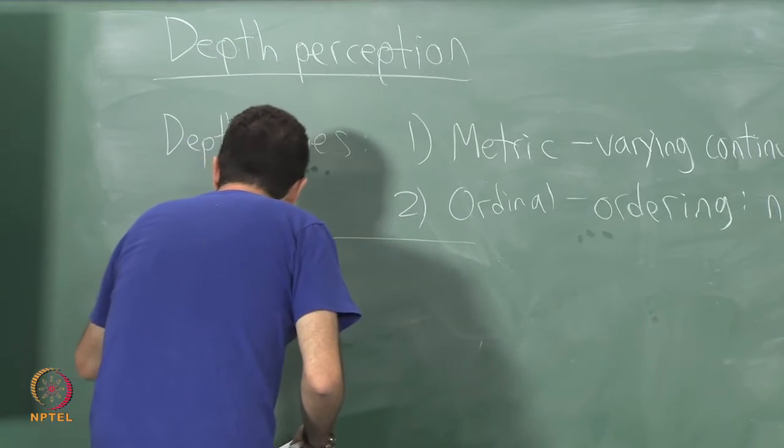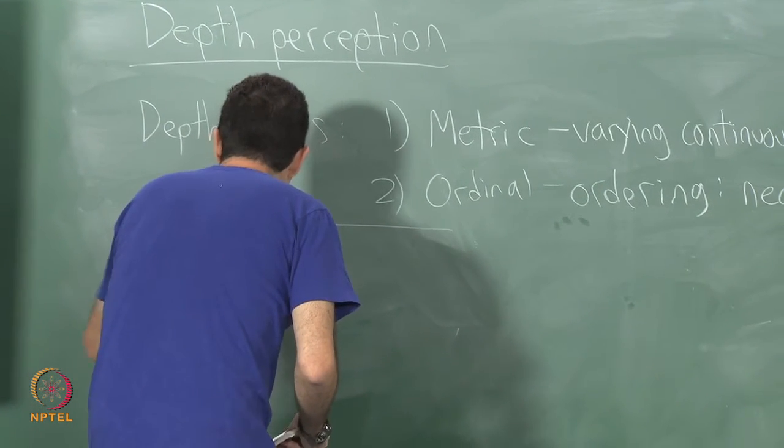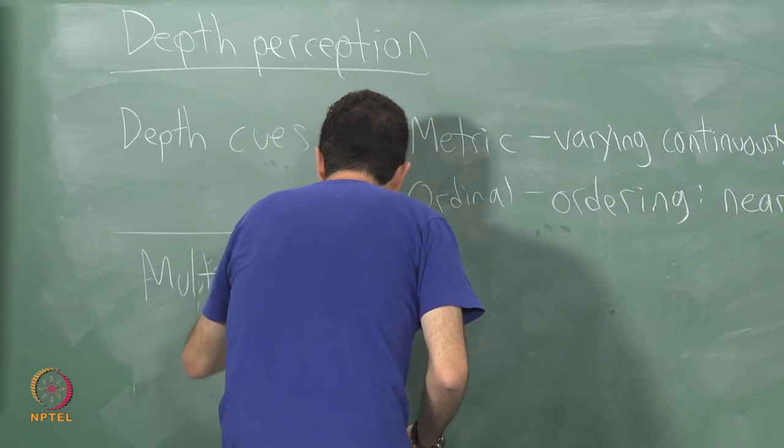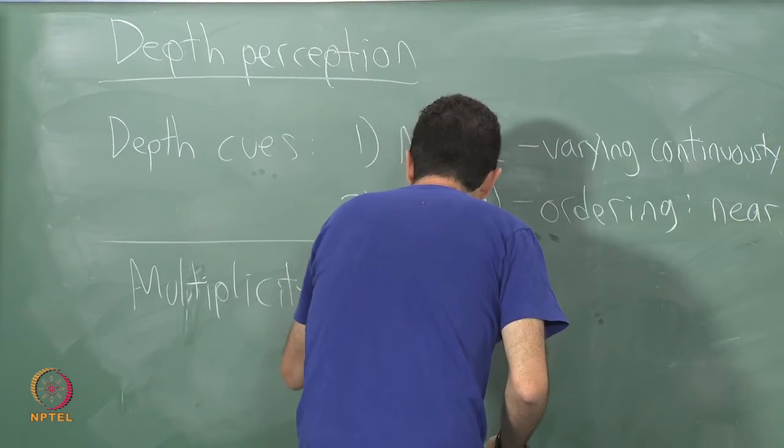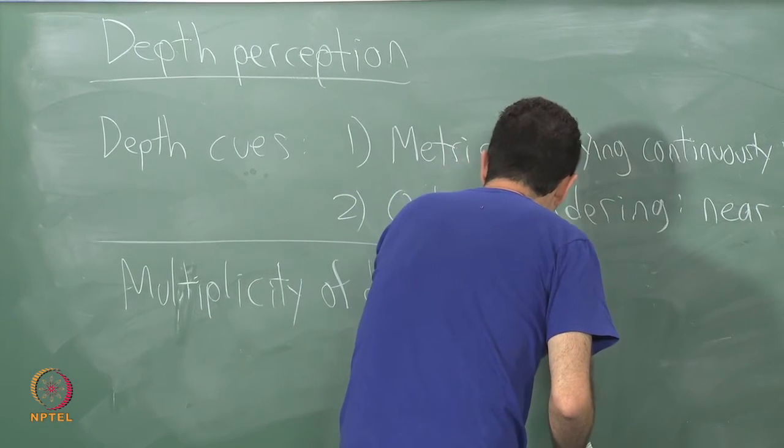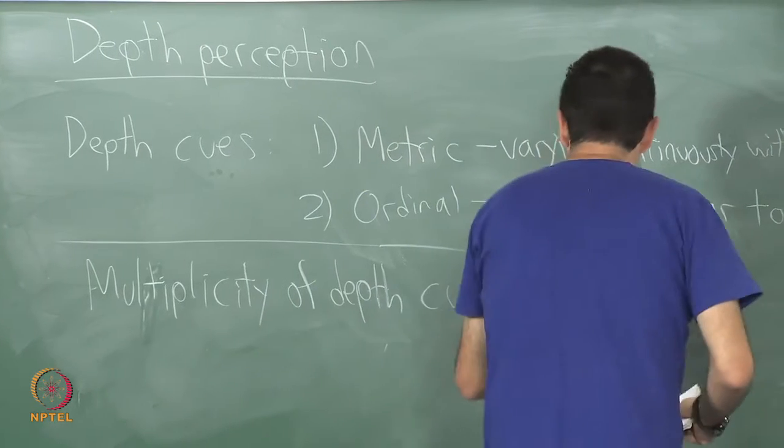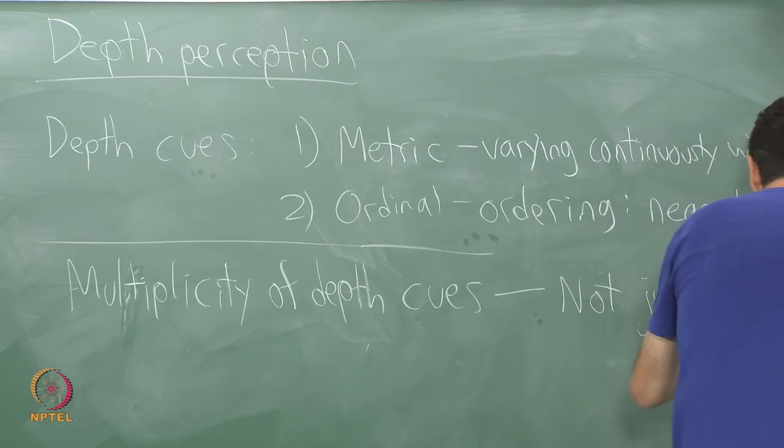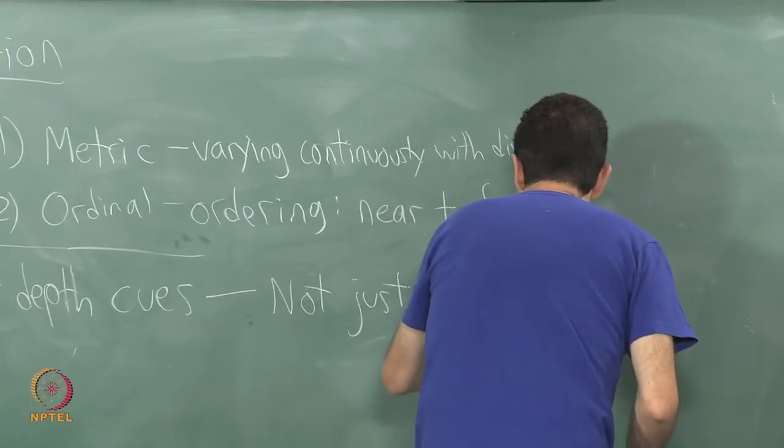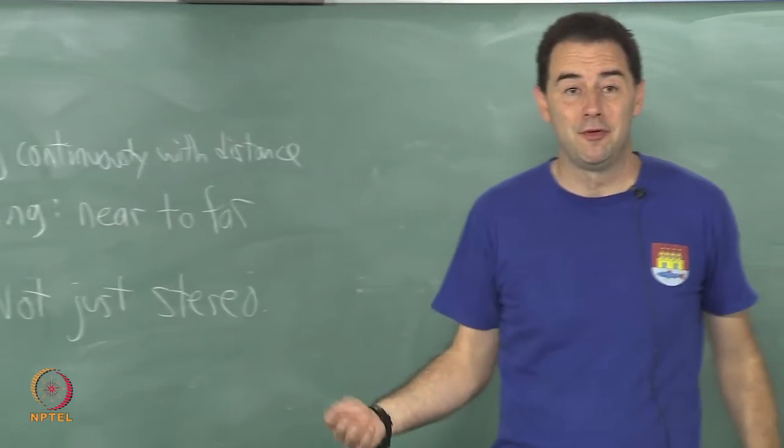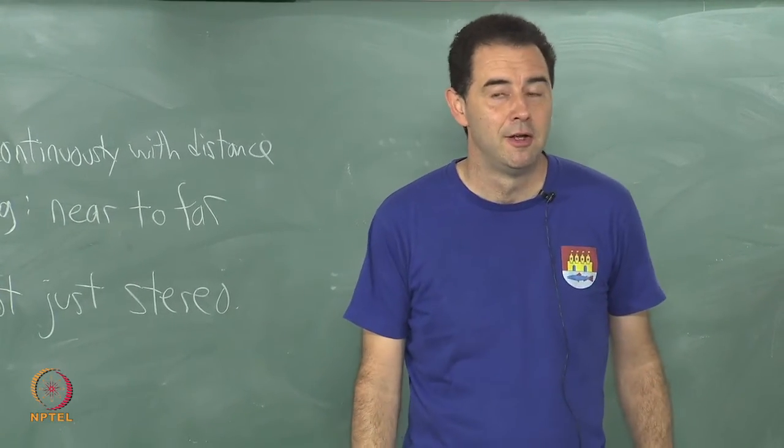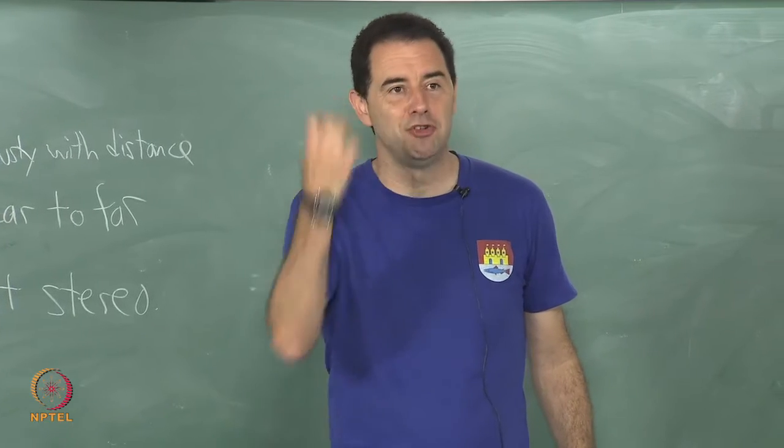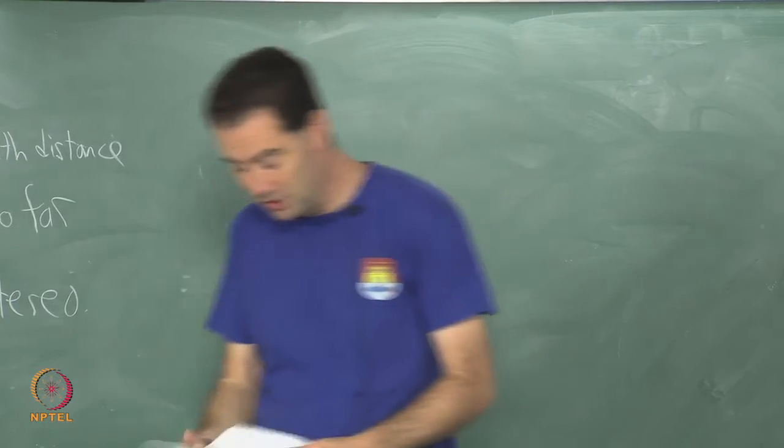Again, the thing I want to emphasize is that there is a multiplicity of depth cues, not just stereo. When you look at panoramic images, for example, if you've had a chance to look at those in the lab they may look quite three-dimensional even though the same image is being presented to both of your eyes. Why is that? We need to talk about that.